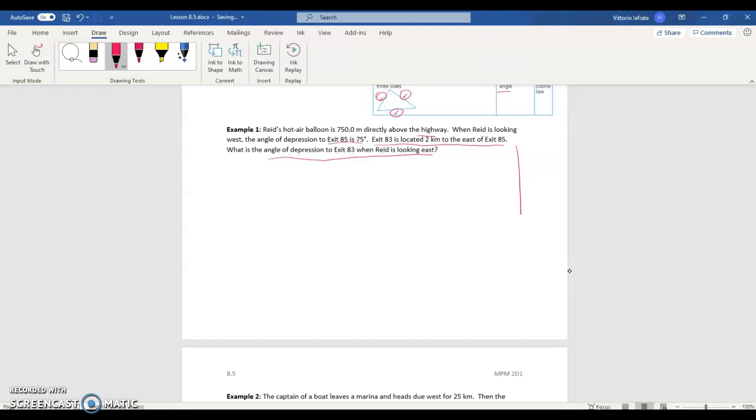First of all, we need to remember what our directions are. So, top of the page is north, right of the page is east, never eat shredded wheat. Let's start drawing our two exits. Exit 85, we'll call it A. And B will be exit 83. And we know they're 2 kilometers away from each other. Now, since I'm dealing with meters here, I want to convert this to meters as well. I just need to be consistent. To convert kilometers to meters, you multiply by 1,000.